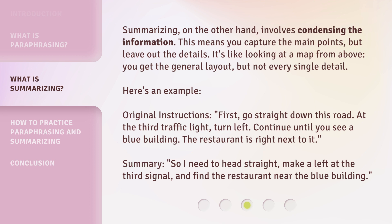Here's an example. Original instructions: 'First, go straight down this road. At the third traffic light, turn left. Continue until you see a blue building. The restaurant is right next to it.' Summary: 'So, I need to head straight, make a left at the third signal, and find the restaurant near the blue building.'